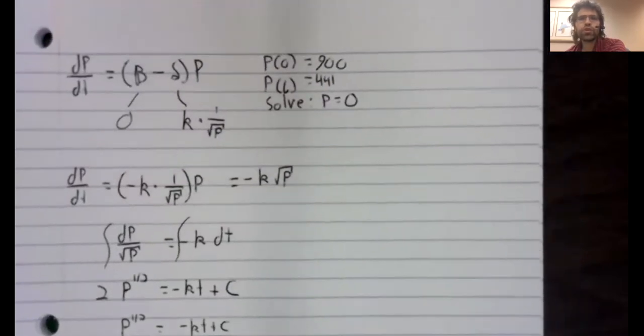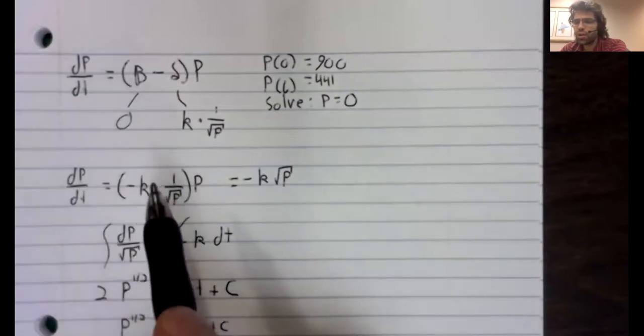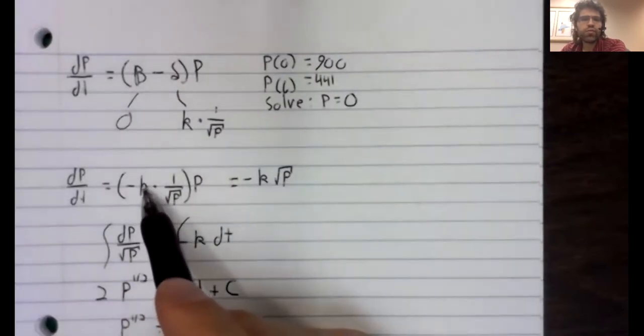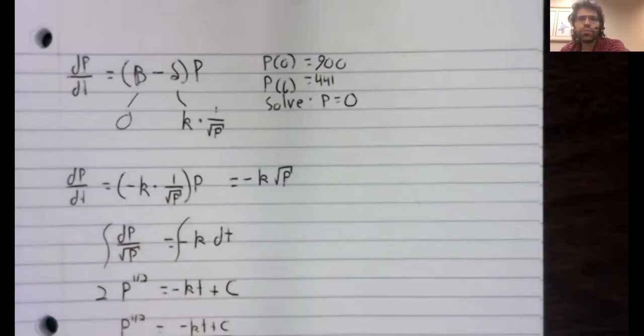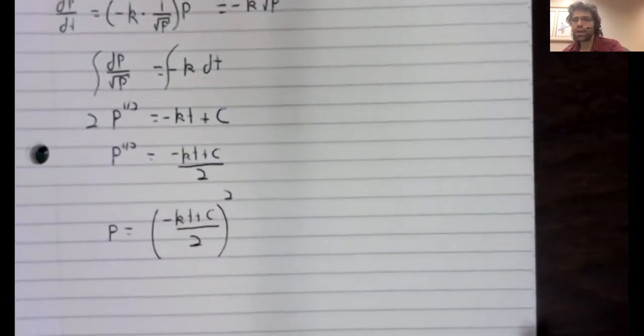We're given two initial conditions. To clarify this a little, this is a first order differential equation. We only need one initial condition for a unique solution. But the unique solution will involve this model parameter k. We need a second initial condition if we want to know the model parameter.